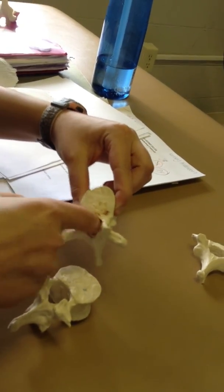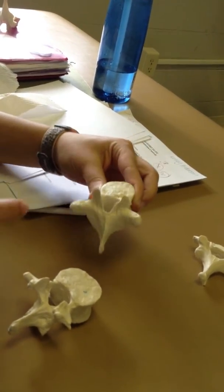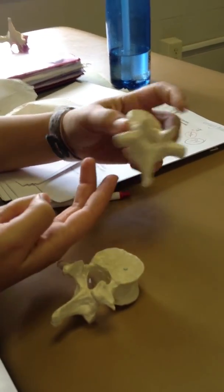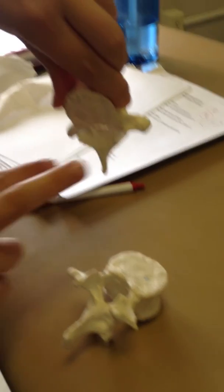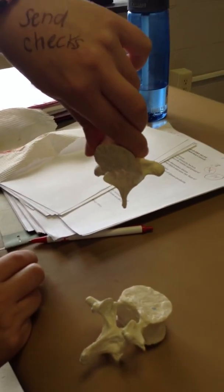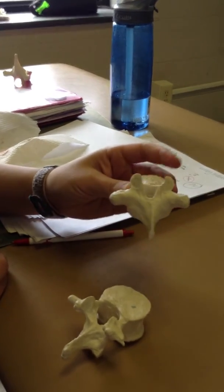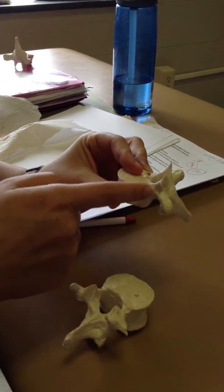Vertebral foramen, then superior articular facet, inferior articular facet, and then transverse costal facet is right here.